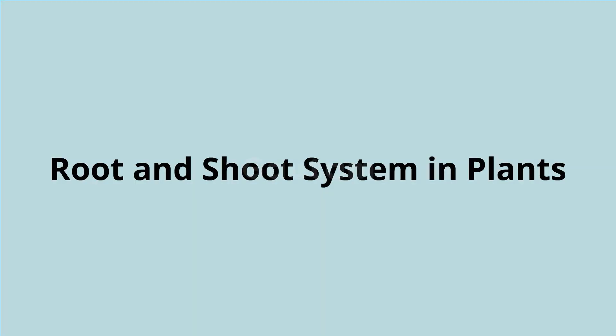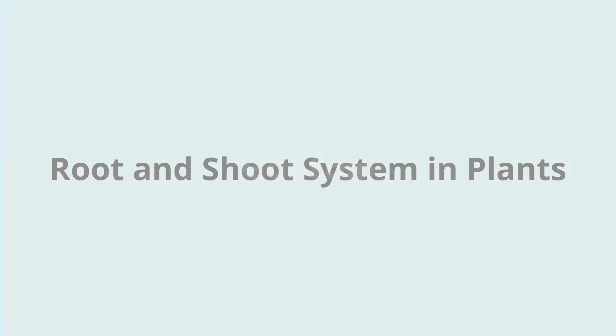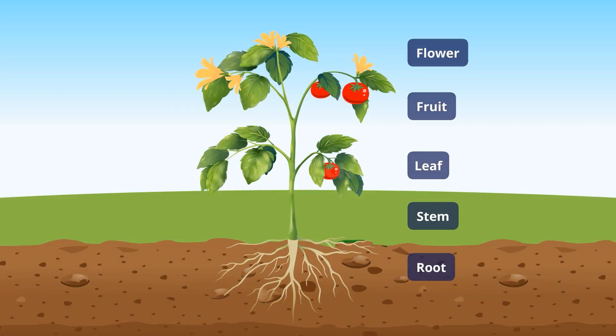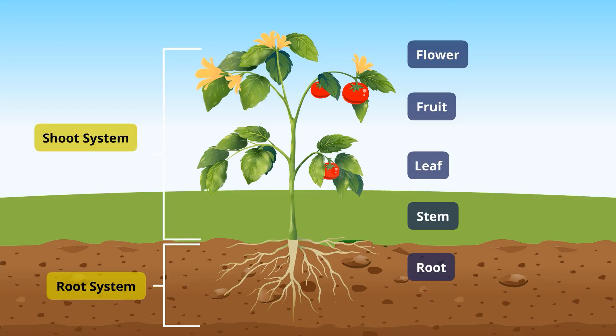Root and shoot system in plants. A plant has two major systems: the root system and the shoot system. Let us learn about root and shoot systems in detail.